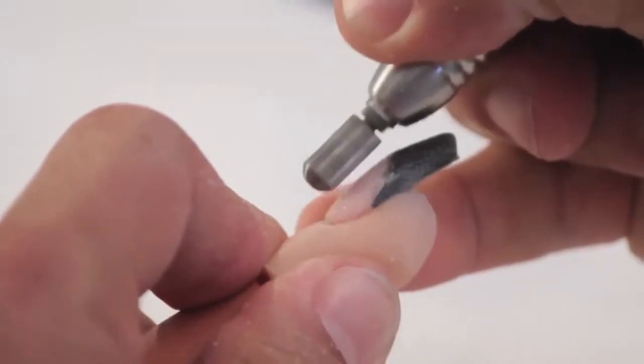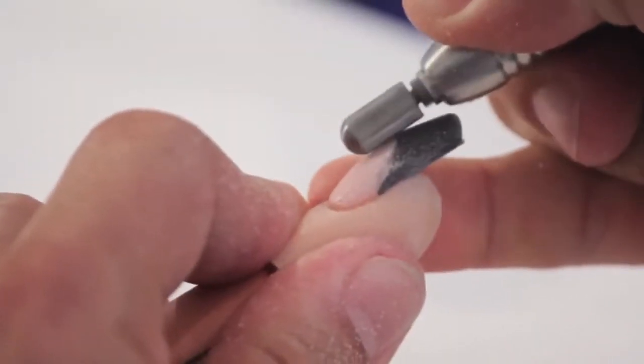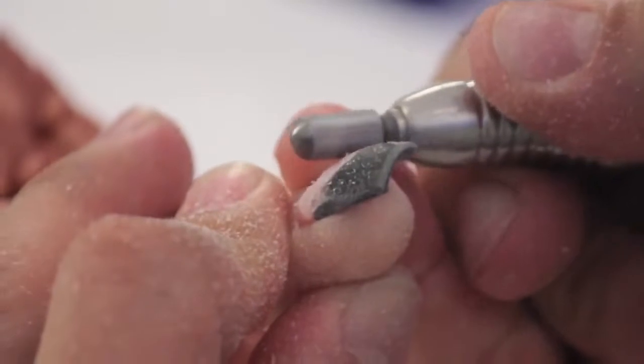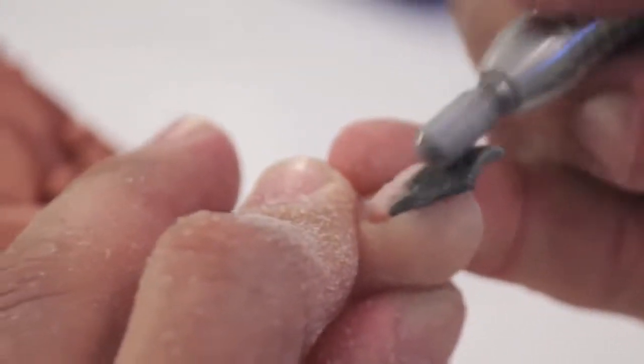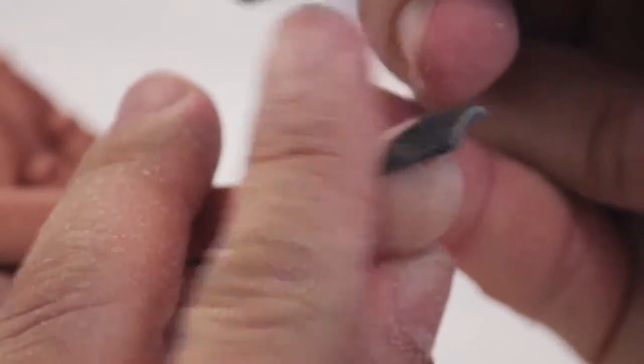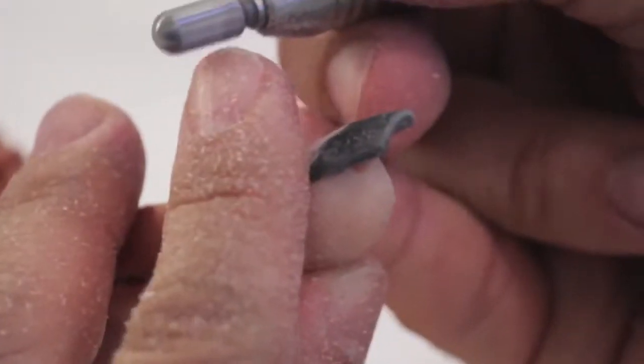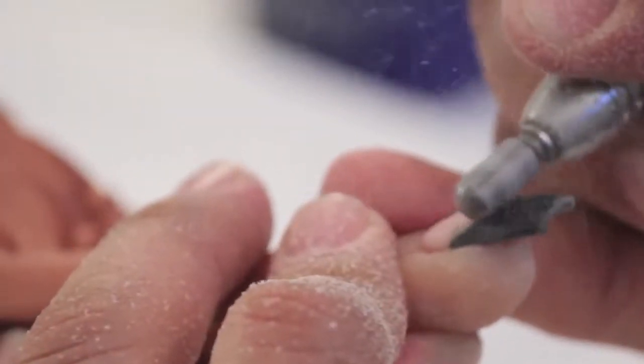I'm going to start from the cuticle area. I'm going to work down towards the front of the nail. I'm going to come behind the smile line from zone 3, working to zone 2. On the barrel, zone 3 here, zone 2 here, zone 1 in one direction towards yourself.